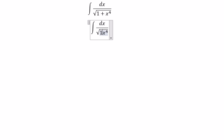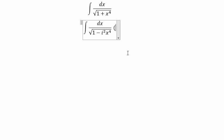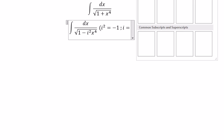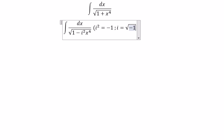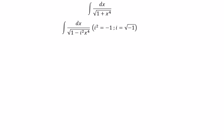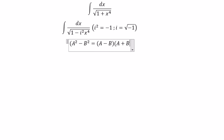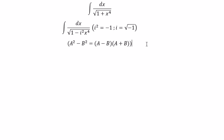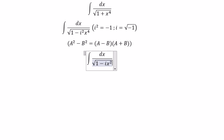We can transform the expression using 1 minus i squared multiplied with s to the power of 4, because i squared is negative one, and we know i equals the square root of negative one. We then apply the formula a squared minus b squared equals a minus b multiplied with a plus b, giving us 1 minus i s squared multiplied with 1 plus i s squared.